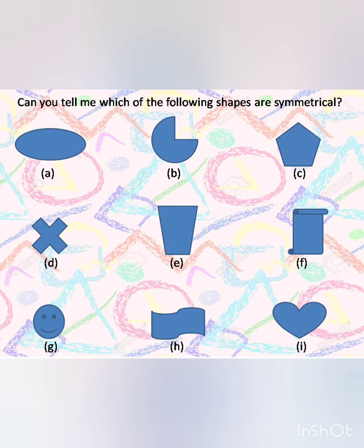Now, can you tell me which of the following shapes are symmetrical? Come on, observe all the shapes and decide. Answer time. The shapes A, C, D, E, G, and I are symmetrical, because as you can see, the shapes on both sides of the symmetrical line are exactly the same.